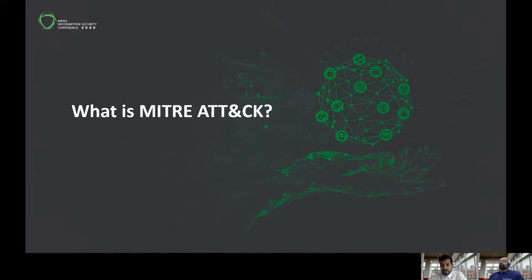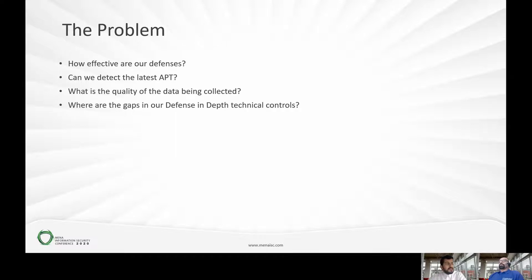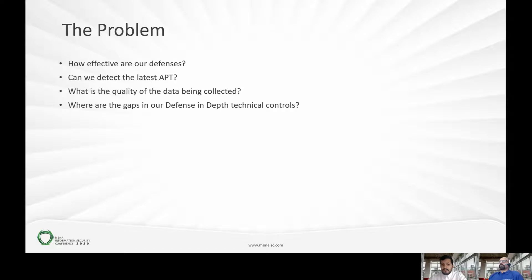The problem we are seeing today in many SOCs is how effective are our defenses. We are investing a lot into cybersecurity solutions, but we don't have a way to measure the effectiveness of those security controls. The second problem is: can we detect the latest APT? If today we see a new APT group, whether it's APT29 or APT32, are we 100% confident that we are able to detect those advanced persistent threats? The third challenge is what is the quality of the data we are collecting into our infrastructure — is this data really valuable for our Security Operations Center, or is it just adding extra burden to SOC staff?